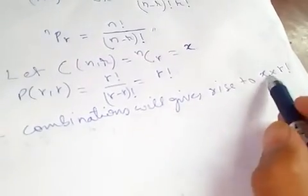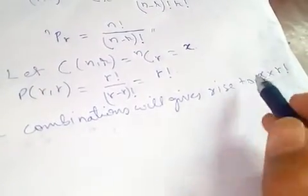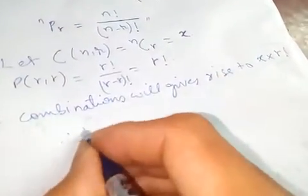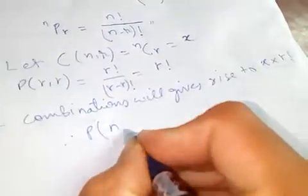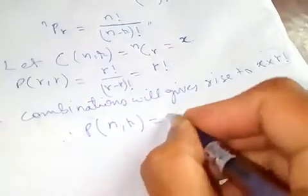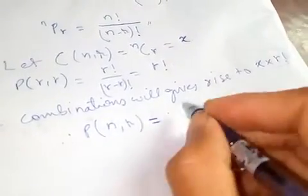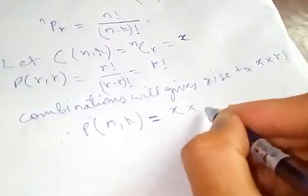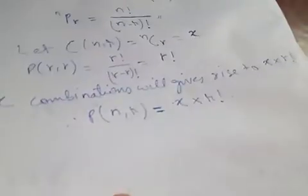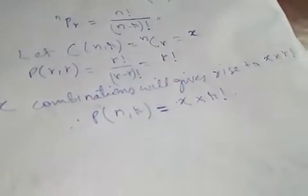Now the total number of permutations of n objects taken r at a time is P(n,r), which equals x times r! factorial. Since we are going to find x